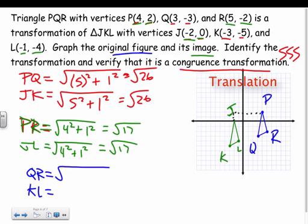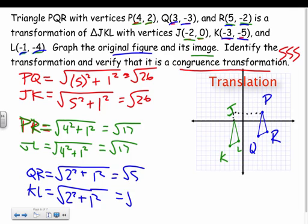And the last one - it doesn't matter, I can check the y's or the x's first. When I look at QR, distance between my x's I got two squared, distance between my y's is one, so one squared. And lastly KL, so the distance between my x's is two, so two squared, distance between my y's is one, so one squared. And there we go - square root of five for both of us.